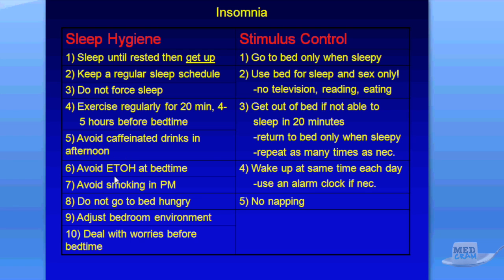Similarly, avoid alcohol at bedtime. This may seem counterintuitive because alcohol is a central nervous system depressant, but while it may help someone fall asleep initially, it is so short-acting that you'll get a rebound awakening two, three, or four hours later. You also want to avoid smoking in the evening — I would say avoid it altogether — as smoking causes edema of the airway and can exacerbate obstructive sleep apnea, among other things.